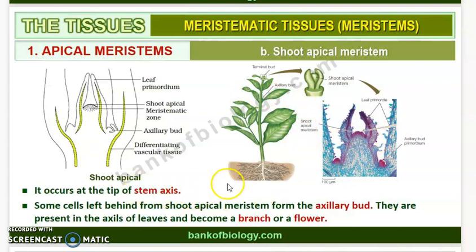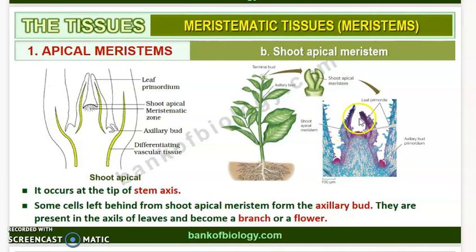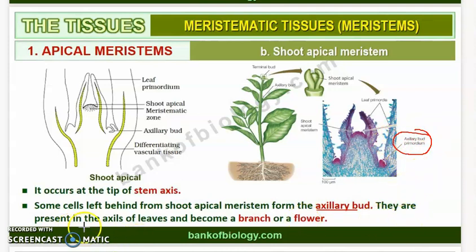The tipmost portion of the stem axis contains the shoot apical meristem. Some cells left behind from the shoot apical meristem will form the axillary buds. These axillary buds are present in the axils of the leaves and can become either a branch or a flower.